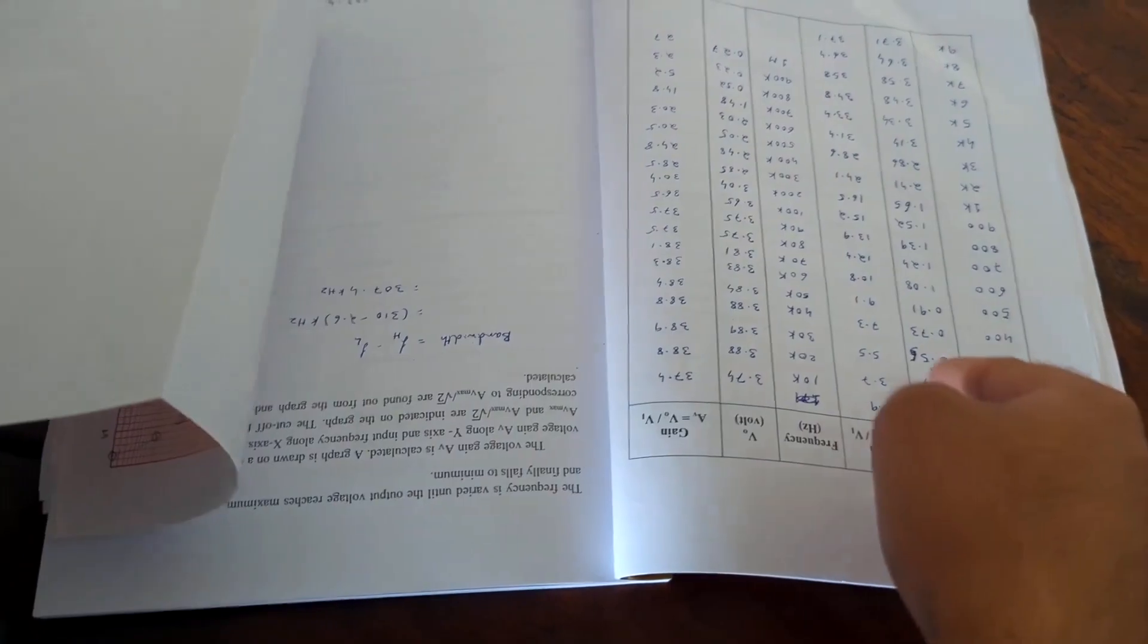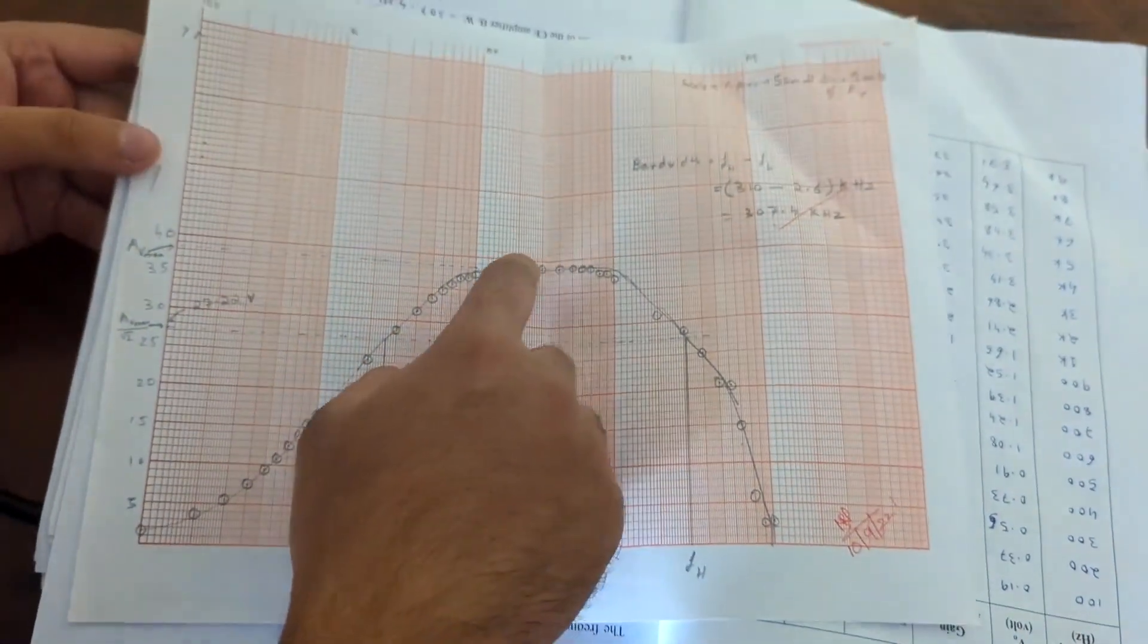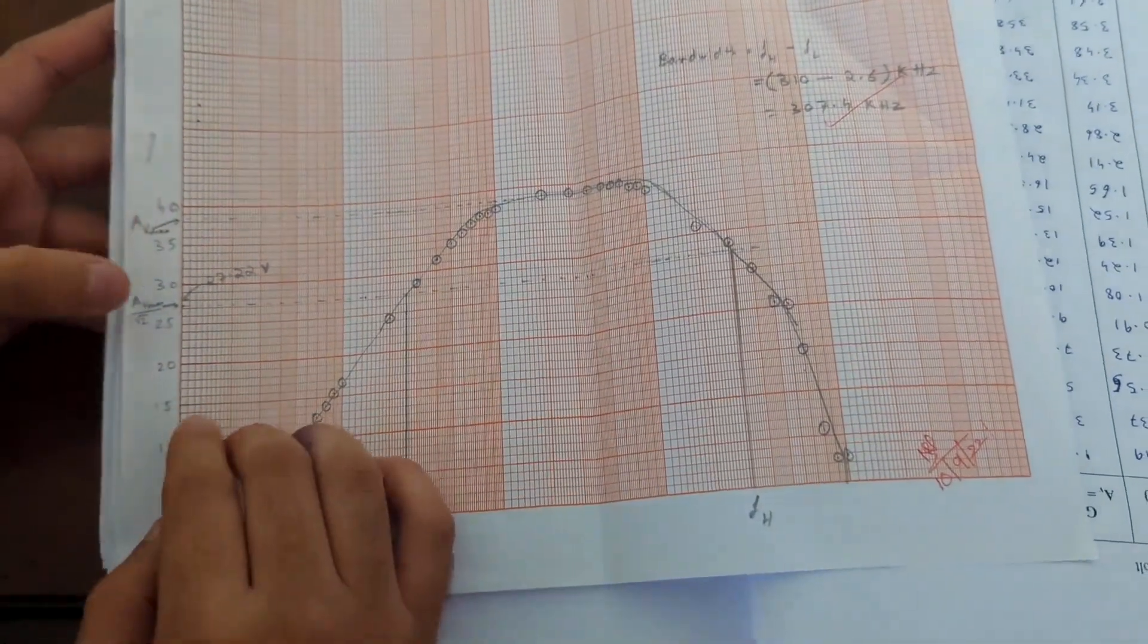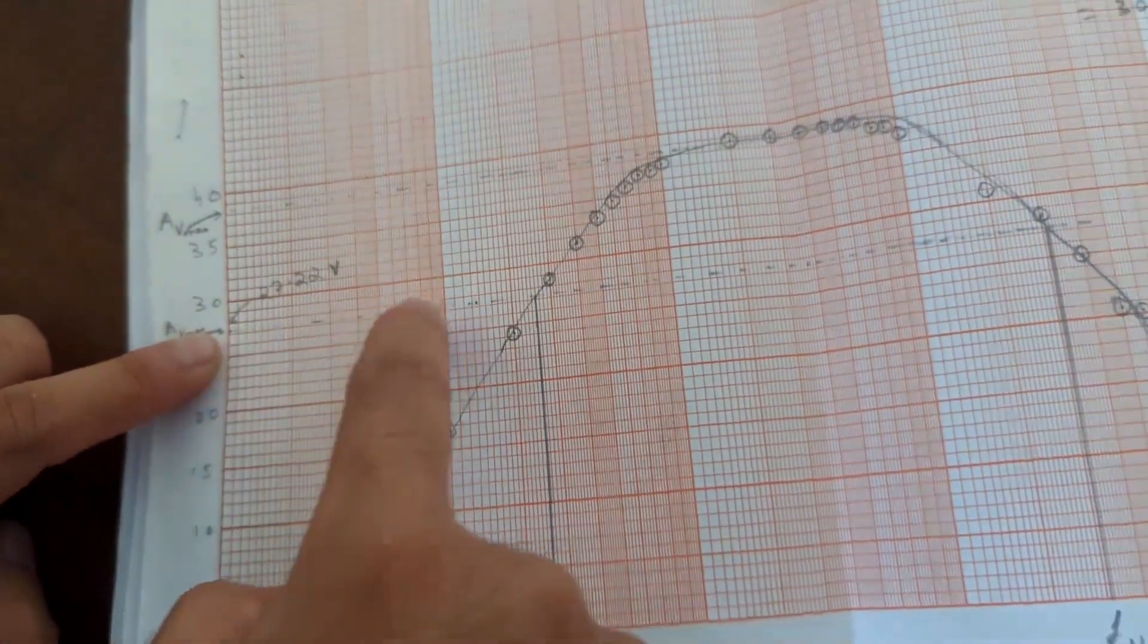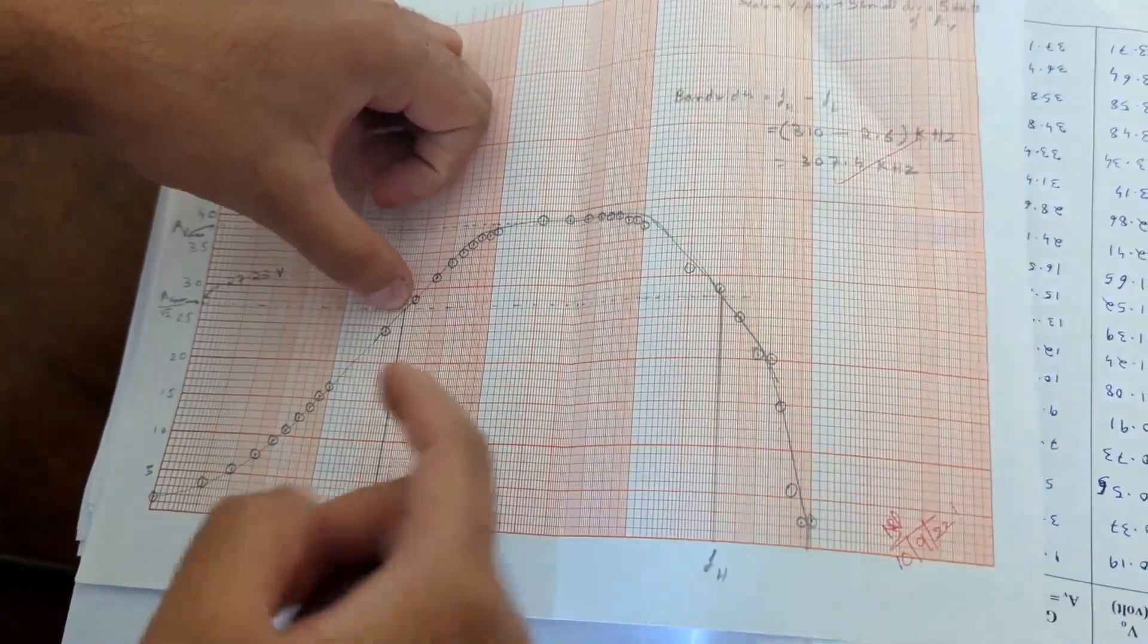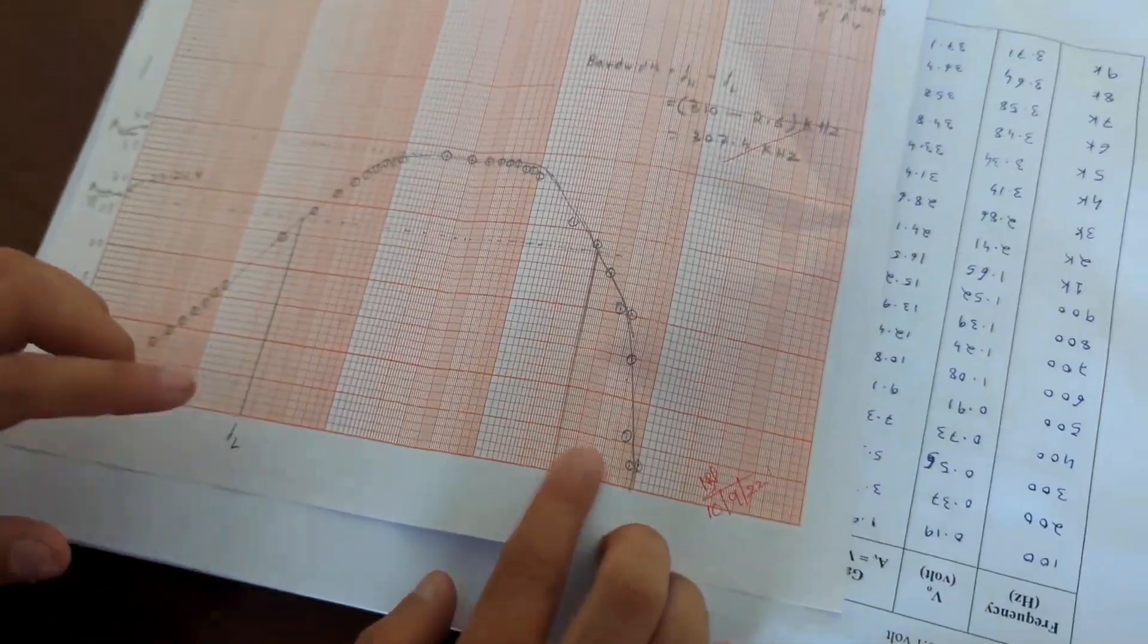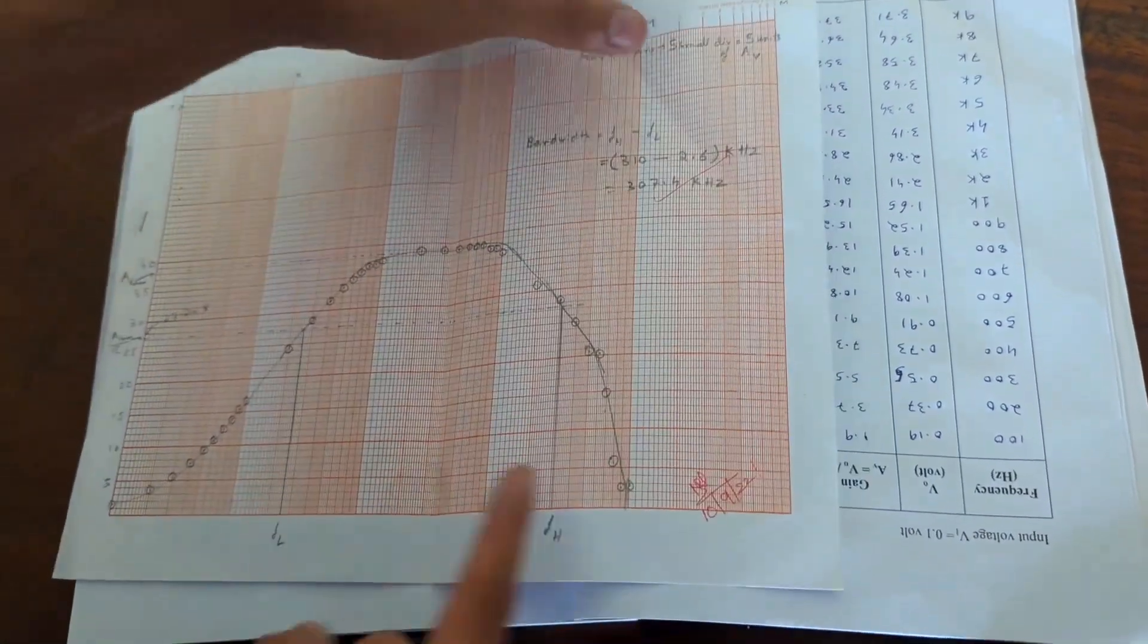So AV max you'll get here. The maximum value of AV. From the graph you can extrapolate it to here. And you'll get AV max. A certain value you'll get. Then you do AV max by root 2. So you'll get a value here. Then you join a line. And then it intersects the curve at two points. You draw a line like this. You get the frequency. This is lower frequency. This is higher frequency. So bandwidth.